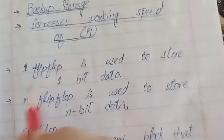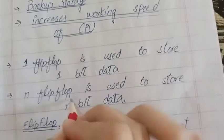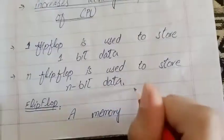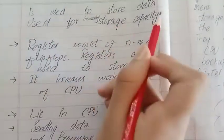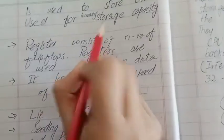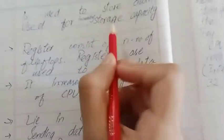Flip-flop is used to store 1-bit data, and n flip-flops are used to store n-bit data. Flip-flop is a memory block which is used to store data and increase storage capacity.